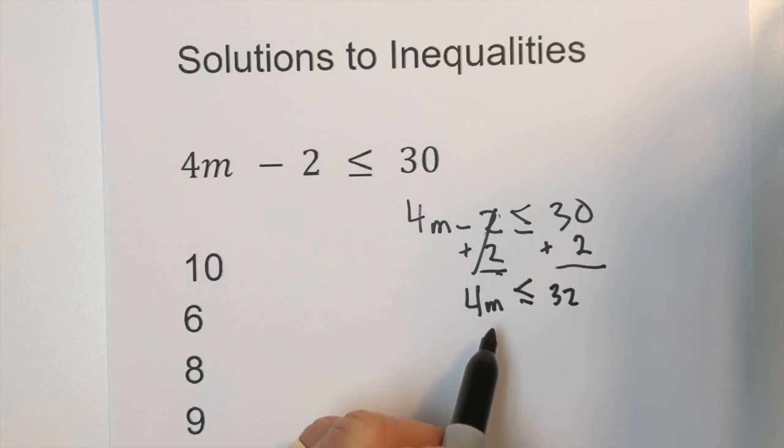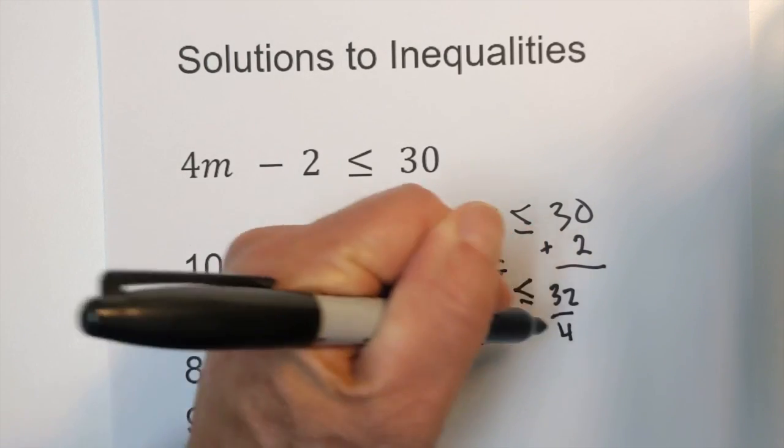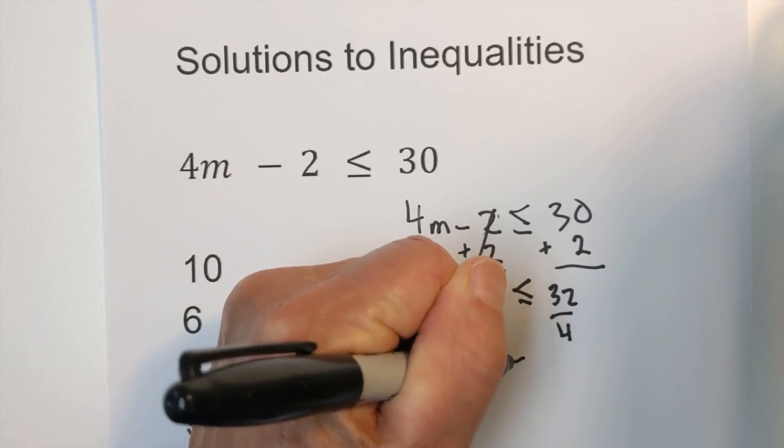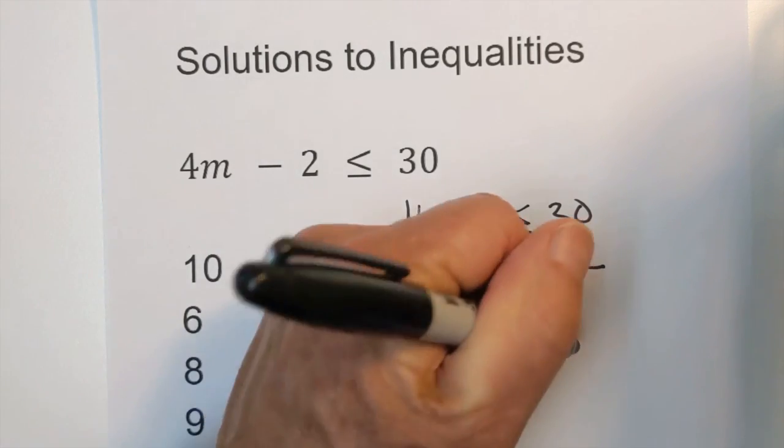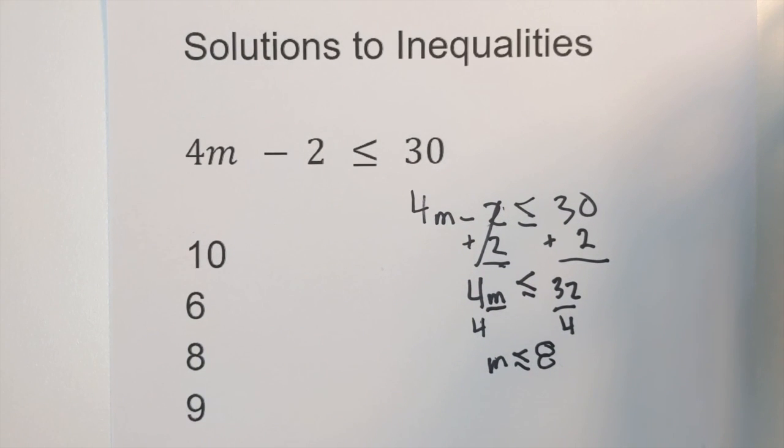Now what I do is I divide by 4 to get the m isolated. So m is less than or equal to 8. So now that is our solution.